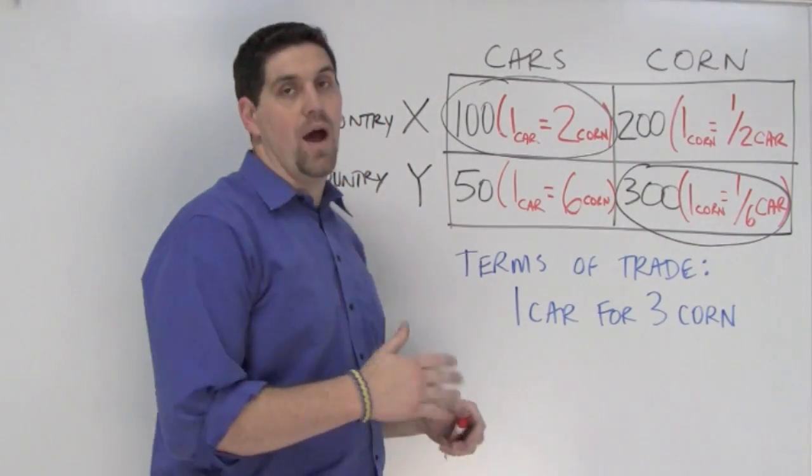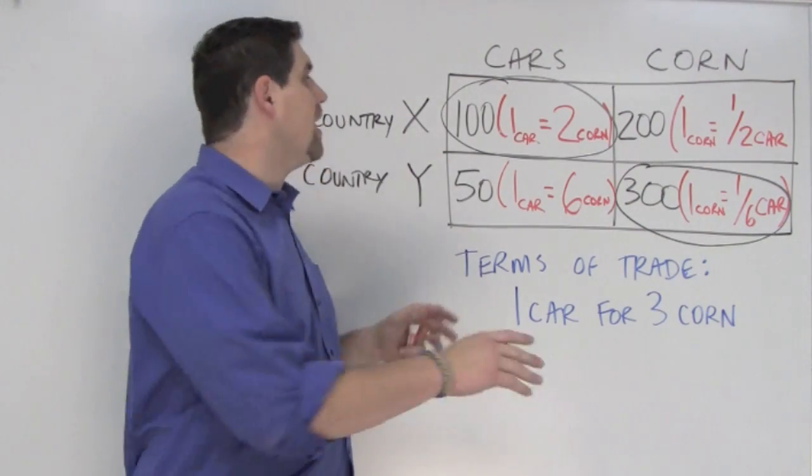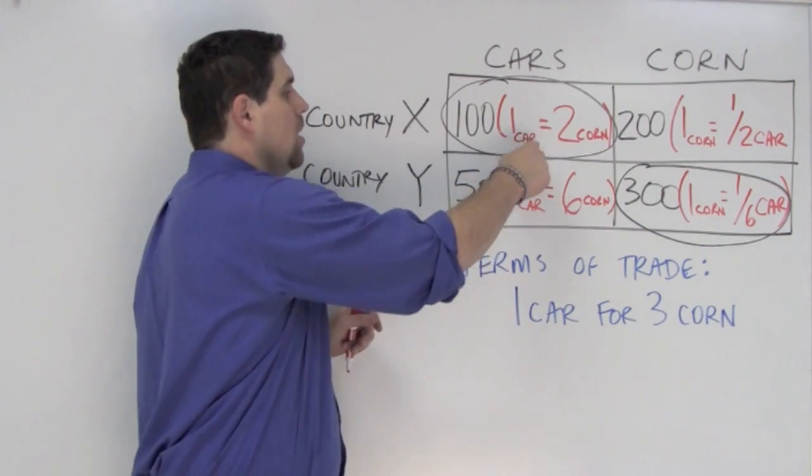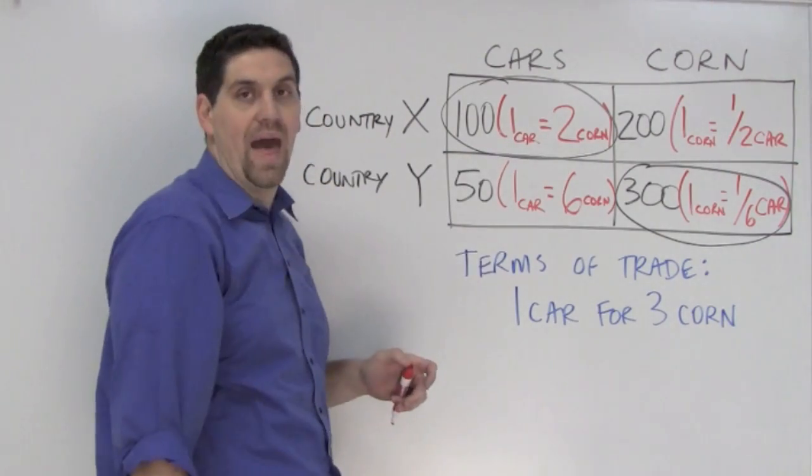Now, it's okay if you're at a loss right now. I've got a trick for you. If you're trying to figure out the right Terms of Trade, all you've got to do is set up a chart and look right here. One car for two corn, one car for six corn. Any number in between that would work.